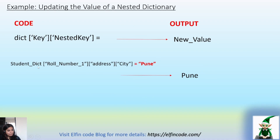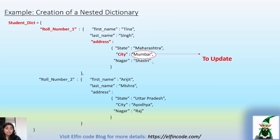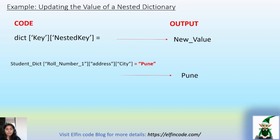To do this, we traverse the student dictionary by mentioning the nested keys to reach the city location: role number one, then address, then city. Then we write the new value to replace Mumbai. So: student_dictionary['role number one']['address']['city'] = 'Pune'. In this way we can update the values of a nested dictionary.